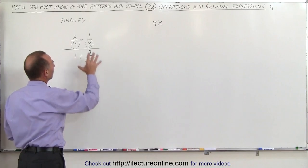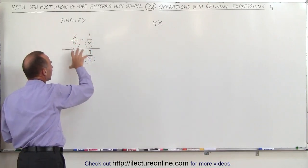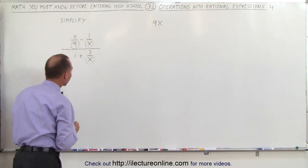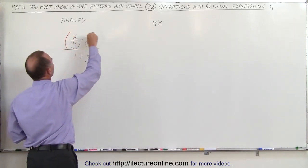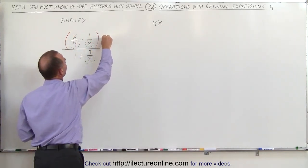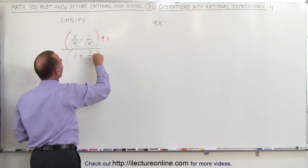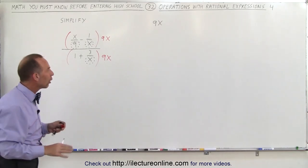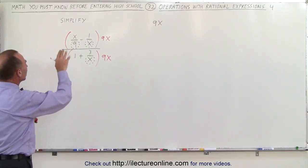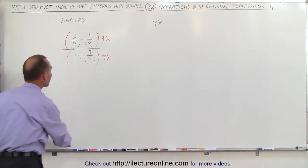We're going to multiply the numerator and the denominator by that lowest common factor. So using a red pen, we're going to multiply the numerator by 9x and we're going to multiply the denominator by 9x. And by doing so, you will eliminate all of the fractions in the numerator and the denominator. All right, let's do that and see what we get.